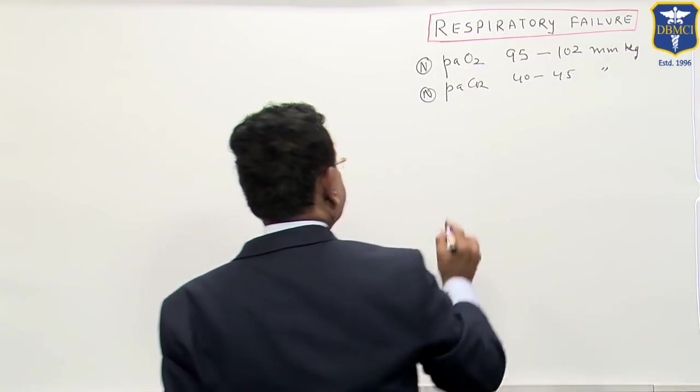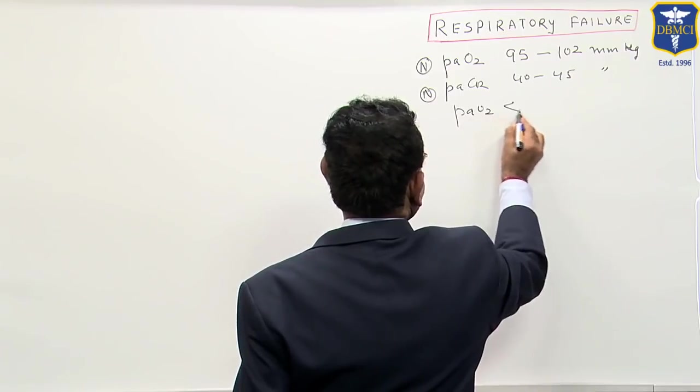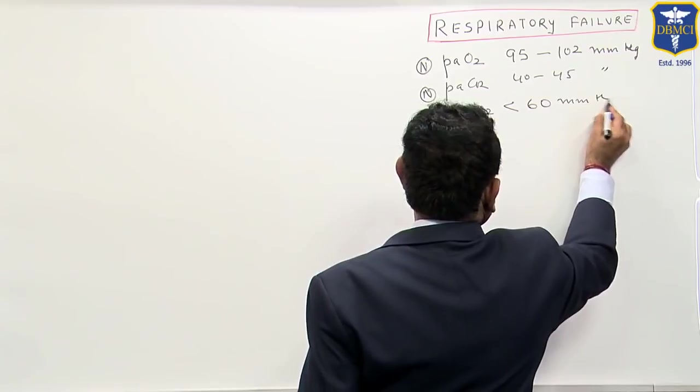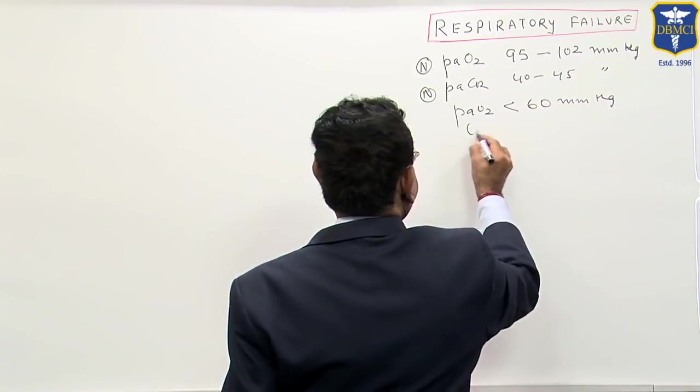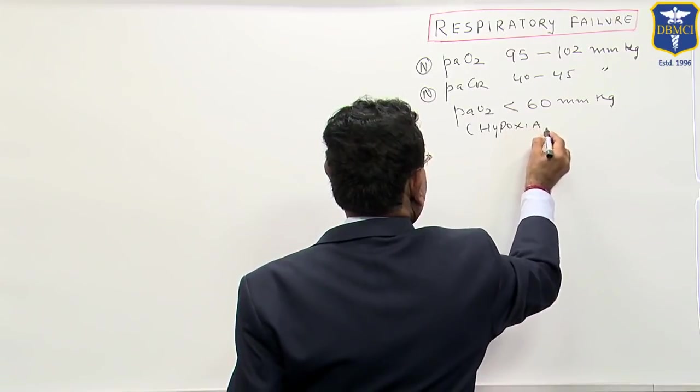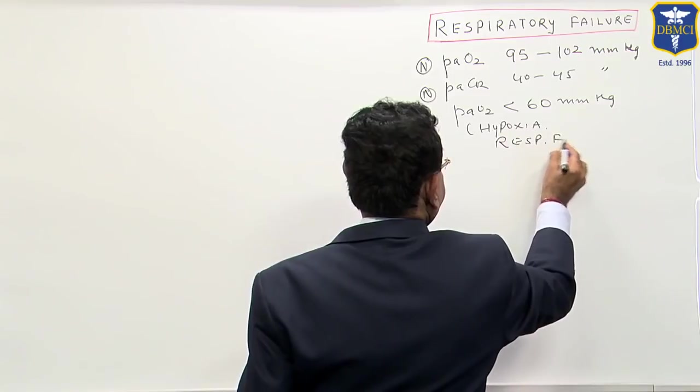So in any condition, if PaO2 is less than 60 mm of mercury, we call this as hypoxia or we also call as respiratory failure.